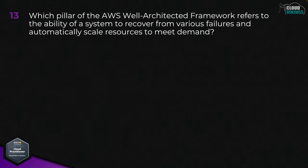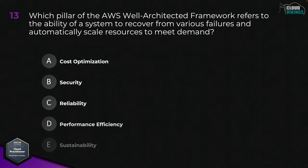Question thirteen: which pillar of the AWS Well-Architected Framework refers to the ability of a system to recover from various failures and automatically scale resources to meet demand? Options are: A, cost optimization; B, security; C, reliability; D, performance efficiency; or E, sustainability. The answer is C, reliability.